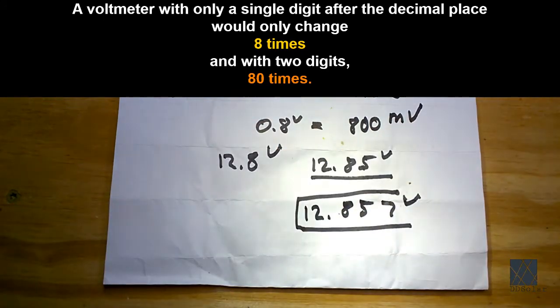And that's usually how it's written. So 800 millivolts is equal to 0.8 of a volt. 1000 millivolts is 1 volt.